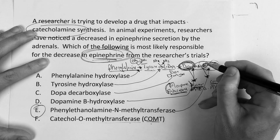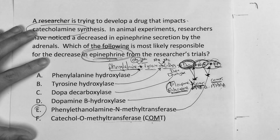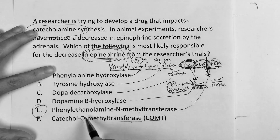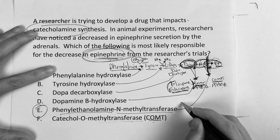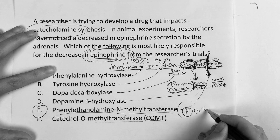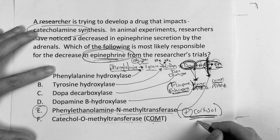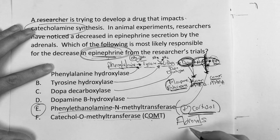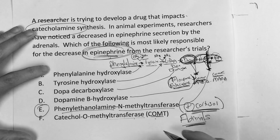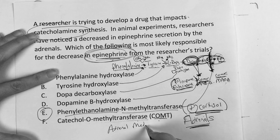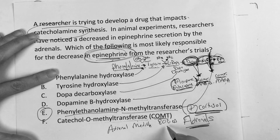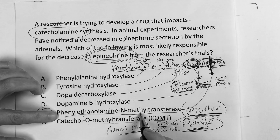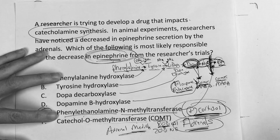Now, phenylethanolamine N-methyltransferase — this enzyme gets upregulated by cortisol. This mainly happens in the adrenals — adrenal medulla specifically. Epinephrine is mainly produced in the adrenals: it's about 80% epinephrine and 20% norepinephrine. And phenylethanolamine N-methyltransferase is upregulated by cortisol.